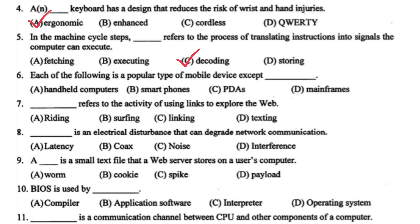Each of the following is a popular type of mobile device except mainframes. Surfing refers to the activity of using links to explore the web. Noise is an electrical disturbance that can degrade network communication. A cookie is a small text file that a web server stores on a user's computer.